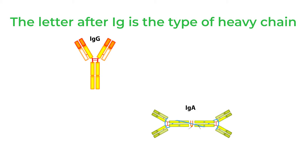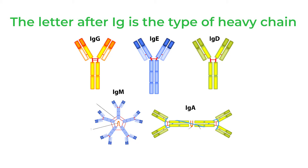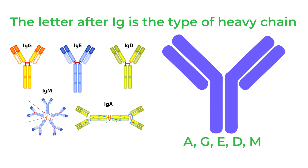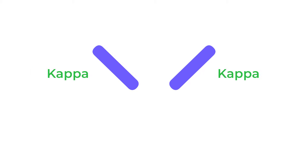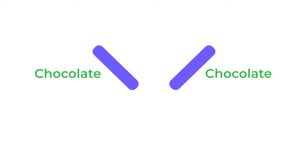The heavy chain carries the label of IgG, IgA, IgD, or IgM. That's a constant region on the stem of the heavy chain that defines what that stem is. And then the light chains could be kappa or lambda — chocolate or vanilla.